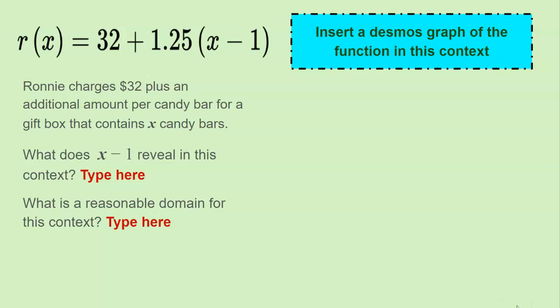Then we move on to another context. This time we have Ronnie charging $32 plus an additional amount for candy bars in a gift box. In this case I'm asking them to tell me what does that x minus 1 telling you? So I'm not going to tell them. I want them to see if they can come up with an explanation for that particular expression x minus 1 in the equation. What is it revealing? And then what is a reasonable domain for this situation? What kind of numbers would you put in here to represent the x variable?